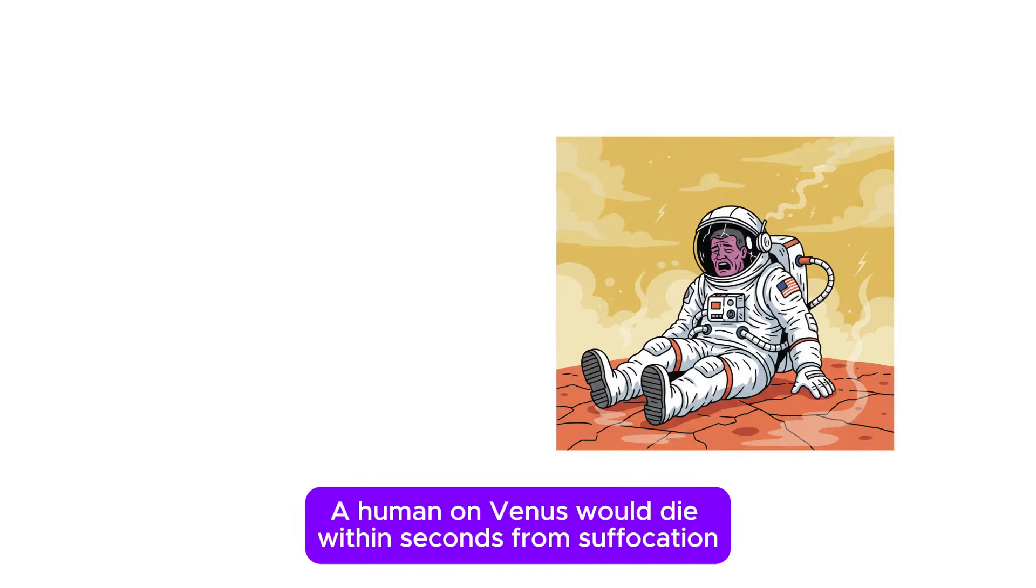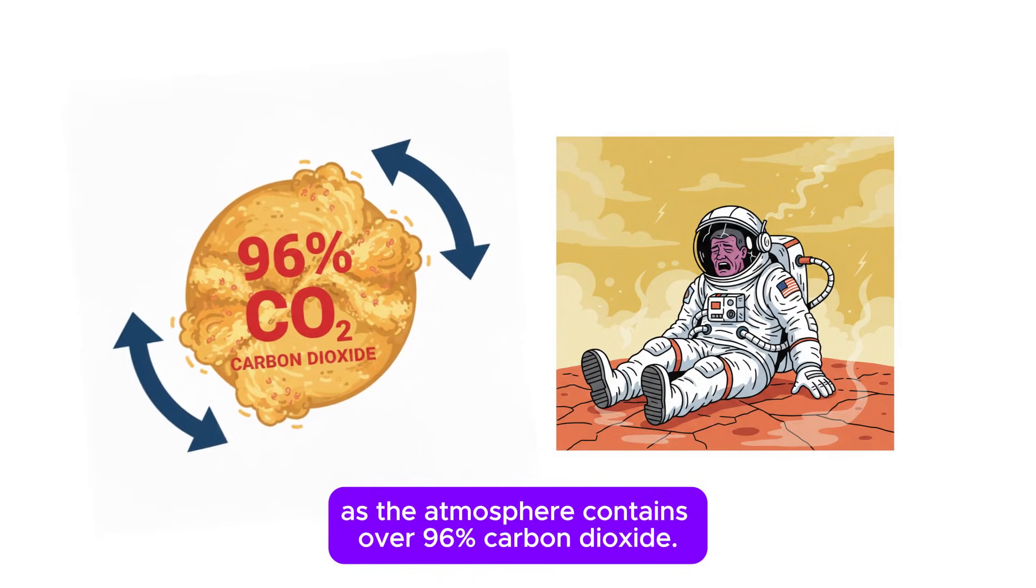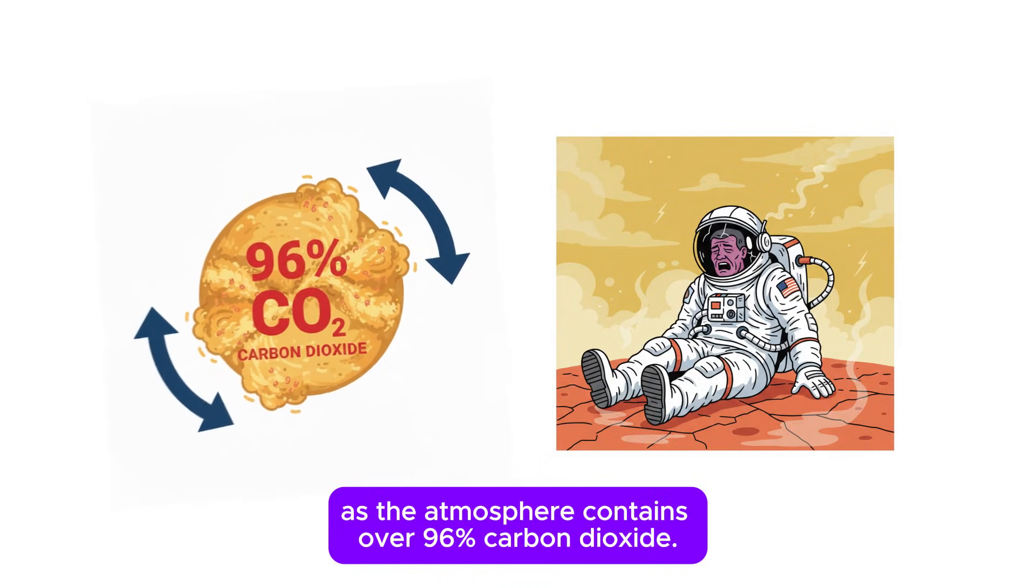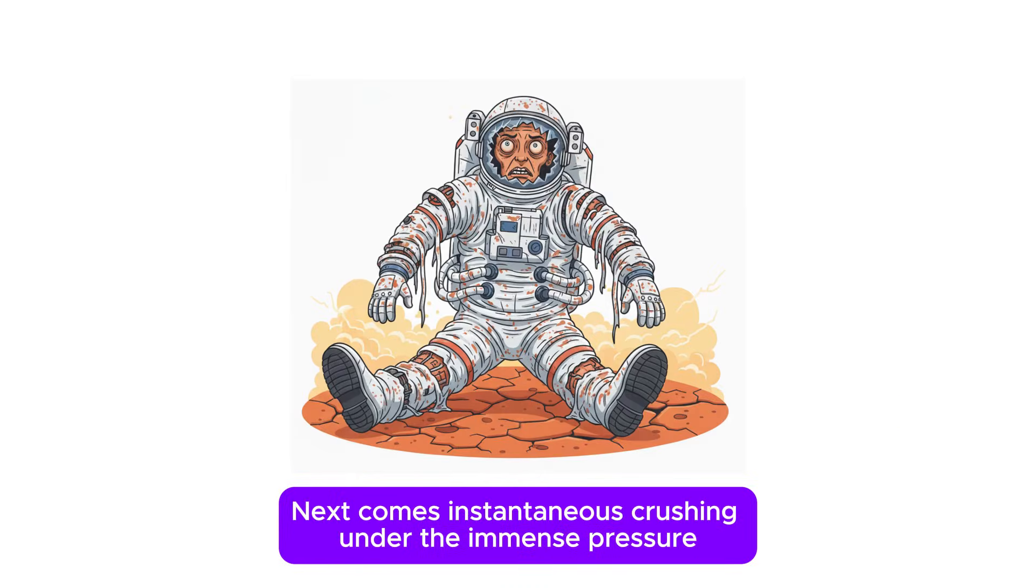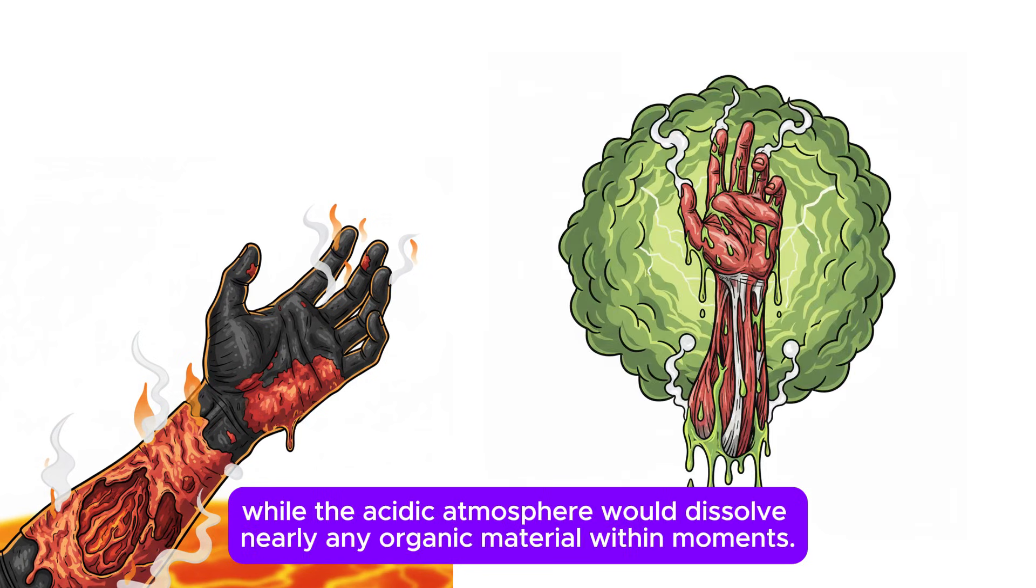A human on Venus would die within seconds from suffocation, as the atmosphere contains over 96 percent carbon dioxide. Next comes instantaneous crushing under the immense pressure, and the heat would burn the skin and tissues faster than the body can respond, while the acidic atmosphere would dissolve nearly any organic material within moments.